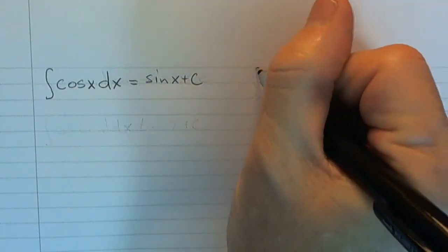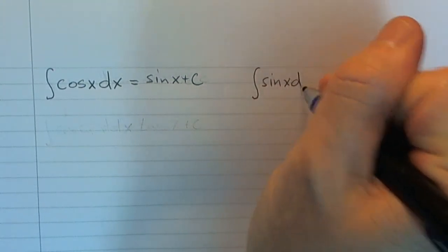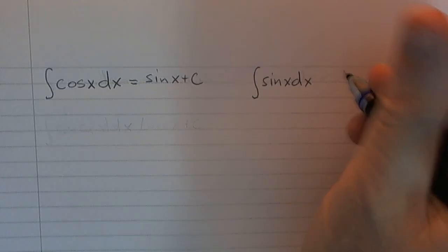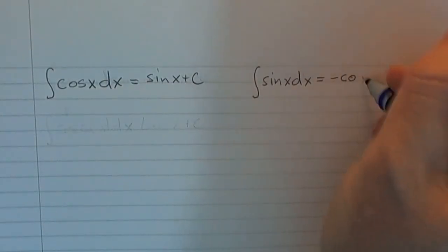Now, if you think about what is the antiderivative of sine, it's not cosine, because remember, the derivative of cosine is negative sine. So we have to compensate for that negative that's in there and say this is negative cosine.